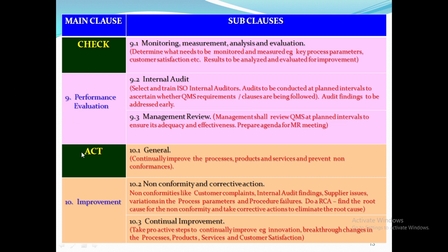Under Act in the PDCA cycle, clause 10 is improvement — this is the last clause. Sub-clause 10.1 covers how to continually improve the processes, products and services and prevent non-conformity. Sub-clause 10.2 covers non-conformity — how to take corrective actions on non-conformities in processes, products, customer compliance issues, ISO internal audits and management review meetings. Do a root cause analysis for non-conformities and take corrective actions to eliminate root causes. Sub-clause 10.3 is about taking proactive steps to continually improve by innovation, breakthrough changes in processes, products, services and customer satisfaction.